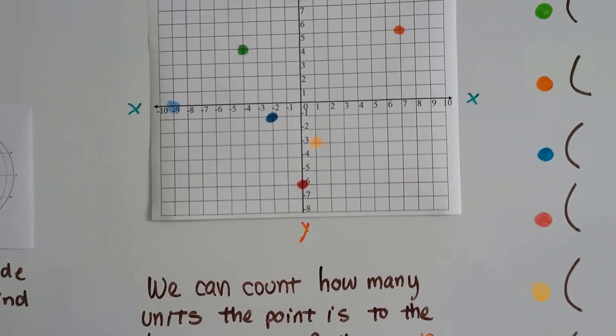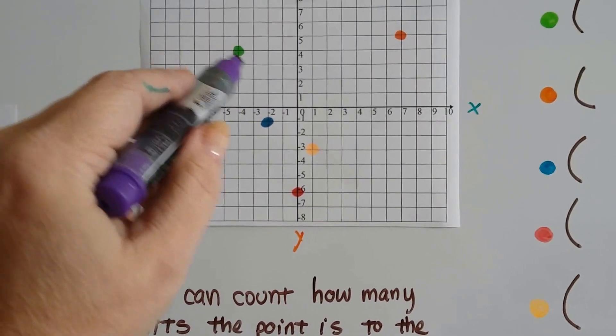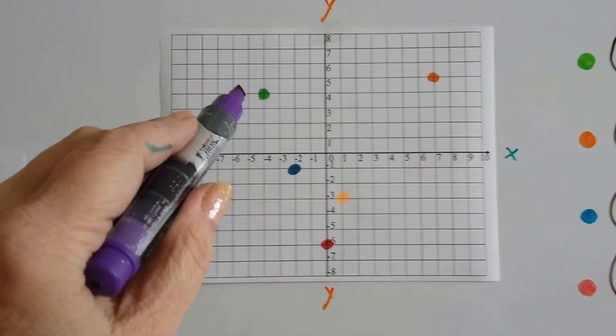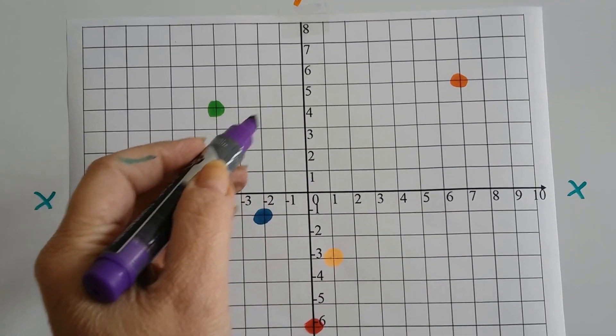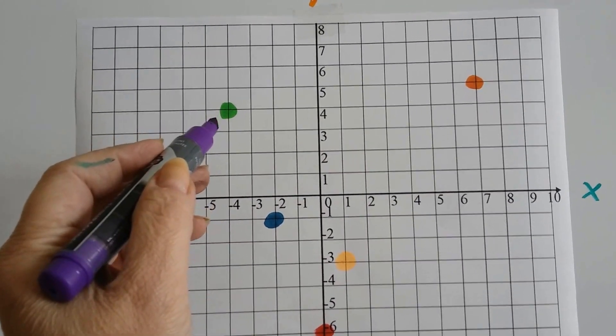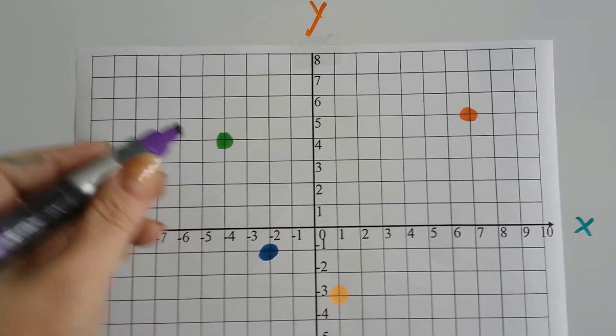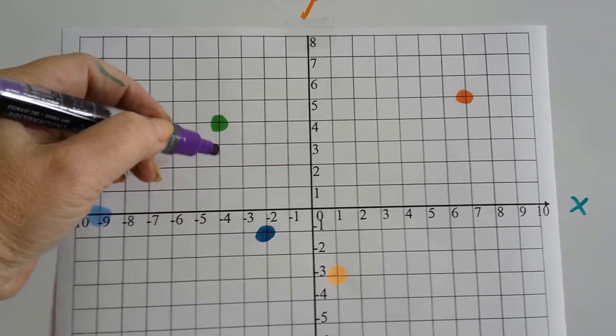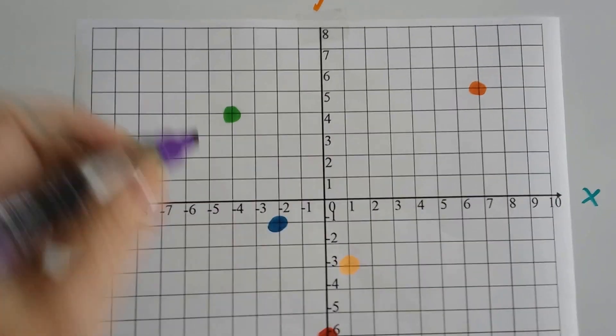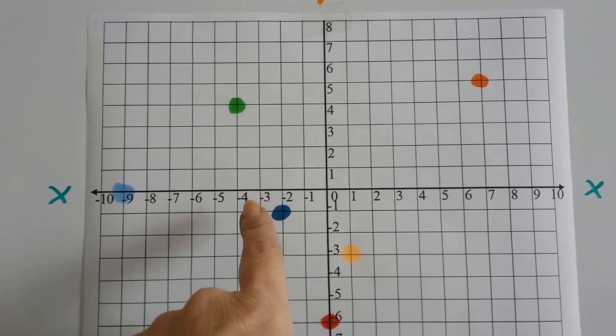Then we count how many units it is from the x-axis for the y-coordinates. We can split it in half like that. So for this lime green one, how many units away from the y-axis is it? Well, it's 1, 2, 3, 4. So the x is 4. And how many units away is it from the x-axis? 1, 2, 3, 4. So we know it's a 4 and a 4.